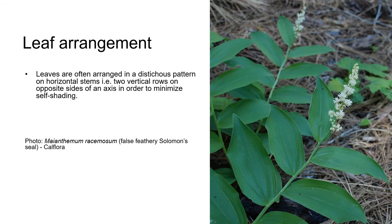Some herbaceous plants have leaves with a distichous leaf arrangement. This means that their leaves are arranged in a single plane along just two sides of the stem, as you can see in the picture on the right here with the false feathery Solomon seal. This plant has long stems that arch out horizontally instead of vertically. The distichous arrangement of the leaves, combined with the arching growth habit, exposes the largest possible leaf surface area to sunlight.